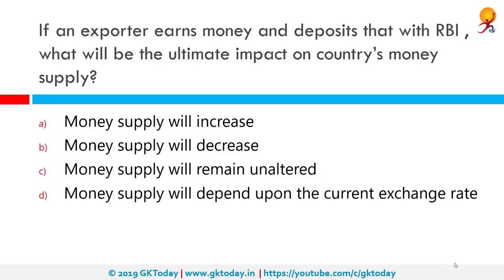If an exporter earns money and deposits it with RBI, what will be the ultimate impact on the country's money supply? The correct answer is that money supply will increase. Monetary policy is the process by which the monetary authority of a country — in India's case, the RBI — controls the supply of money in the economy by controlling interest rates to maintain price stability and achieve high economic growth.